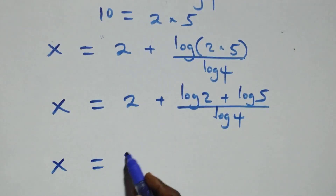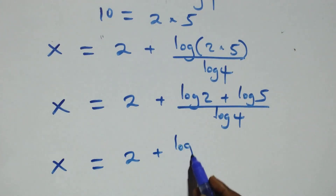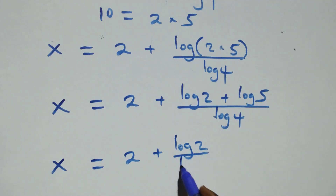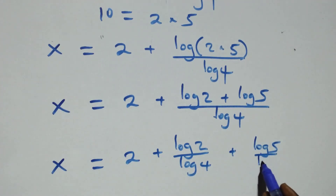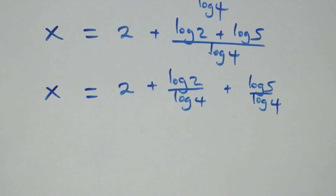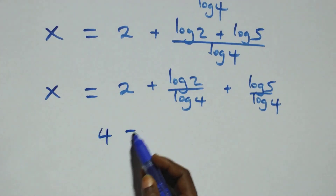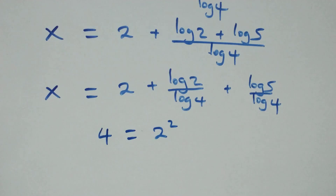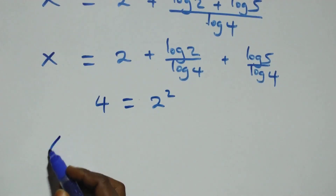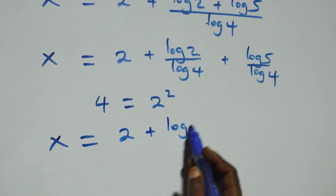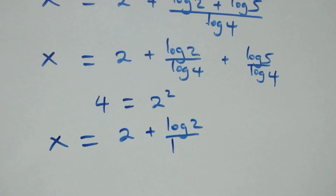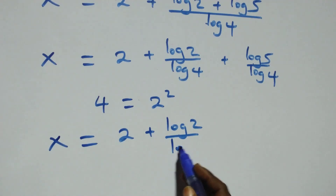We have x equals to 2 plus log 2 over log 4 plus log 5 over log 4. Then, next step here, we can write 4 as 2 times 2, that is 2 squared. And what we have here becomes x equals to 2 plus log 2 over log of 2 squared.